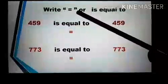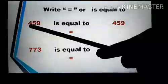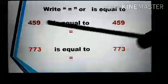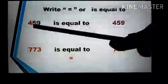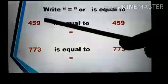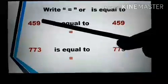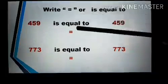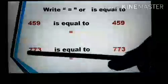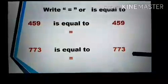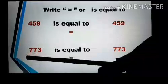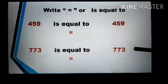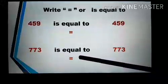Next we compare 459 and 459. The first digit is the same, the second digit is also the same, and the third digit is also the same. So we can say 459 is equal to 459. We use this symbol for equal to. Next we have 773 and 773. Comparing each digit, all are the same, so 773 is equal to 773. We use this symbol for equal to.